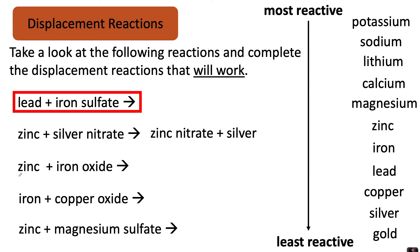Next, zinc and iron oxide. Zinc is more reactive than iron, so it will displace the iron, and the products will be zinc oxide plus iron.